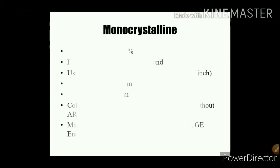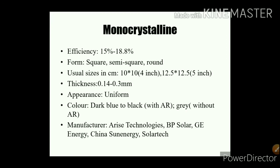The efficiency of monocrystalline solar cells is 15 to 18.8%, which is the highest among all solar cells we are practically implementing in our solar power plants. Its shape is square, semi-square, or round. Sizes are usually 4 to 5 inches. Thickness is 0.14 to 0.3 mm. Appearance: when light is incident on the monocrystalline solar cell, we see a uniform appearance, and the color appears dark blue to black with anti-reflective coating, and gray without anti-reflective coating.